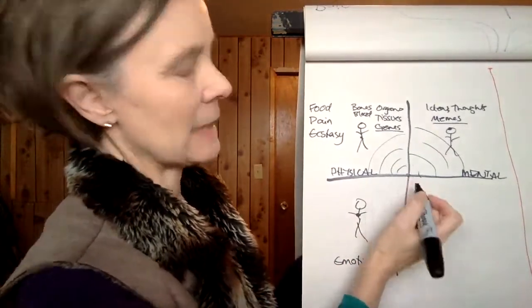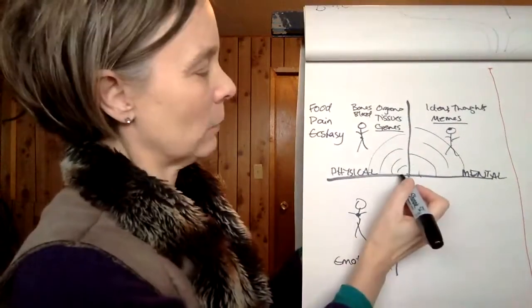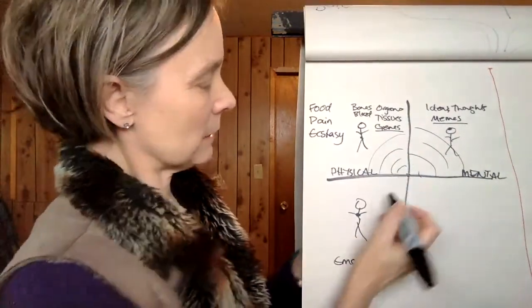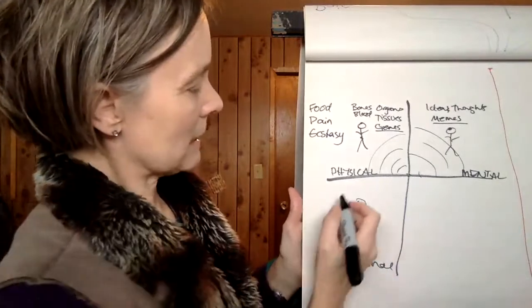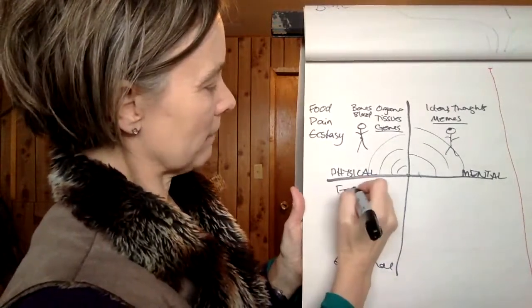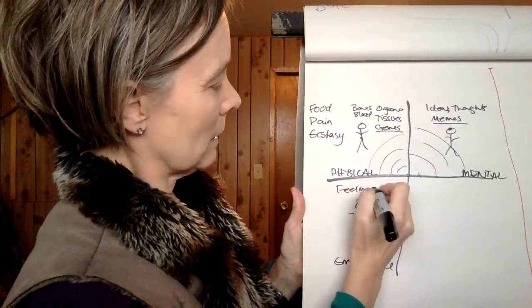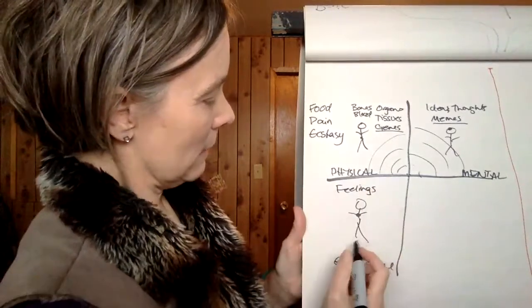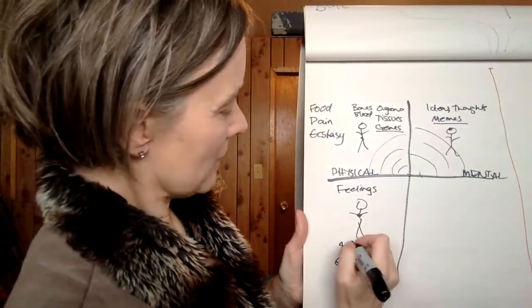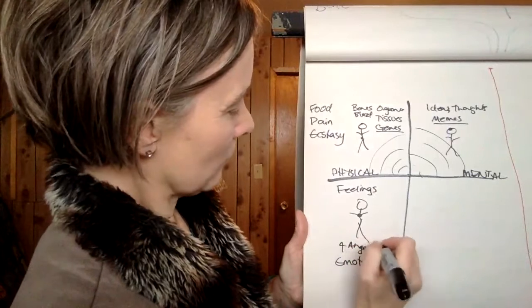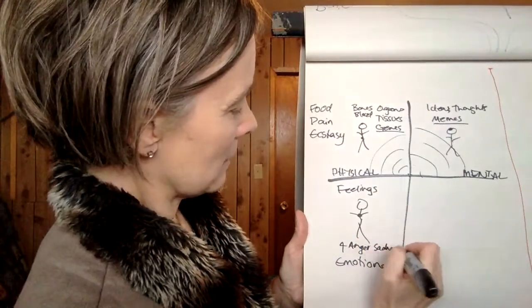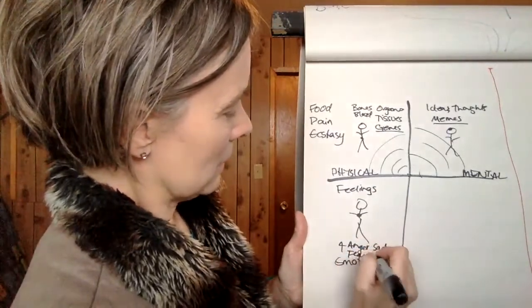The emotional body, again, begins let's say in utero, where the child that's growing experiences feelings. The four primary feelings being anger, sadness, fear, and joy.